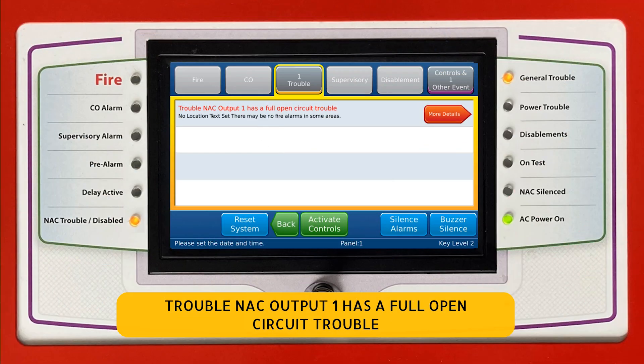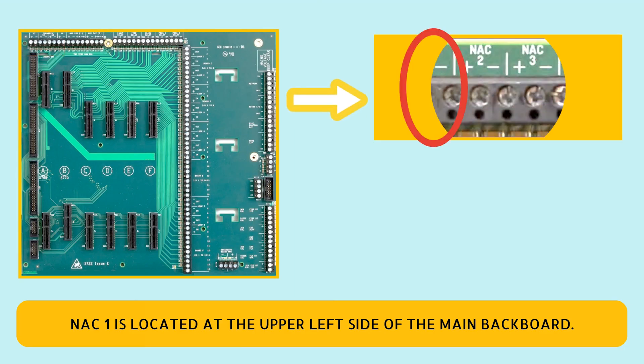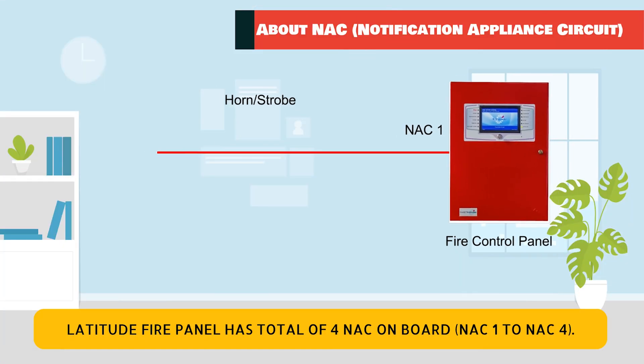The trouble reads: NAC output one has a full open circuit trouble. NAC1 is located at the upper left side of the main backboard. The Latitude fire panel has a total of four NACs on board — NAC1 to NAC4.